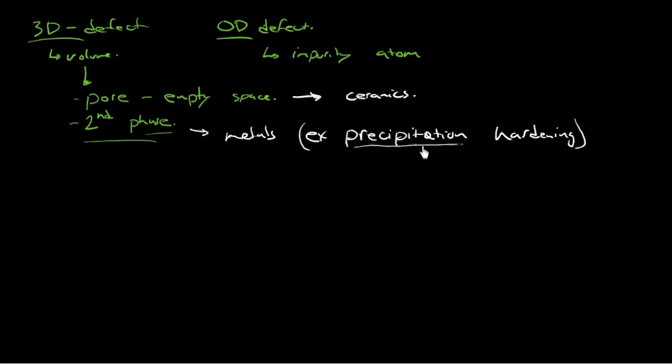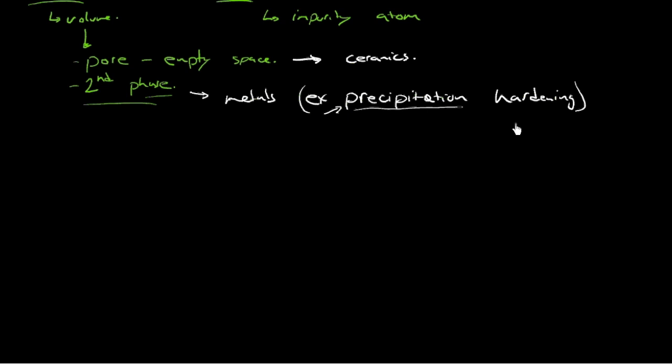So what we want to look at, though, without looking into all the specifics of how you do precipitation hardening, is just how these second phase particles present an obstacle to dislocation movement. And much like we did when we discussed dislocations, I'm not even drawing the dislocation, I'm just trying to draw the lattice here. And then say we have a dislocation that's moving along through this, and we describe this for passing across a grain boundary.